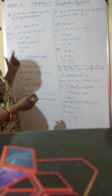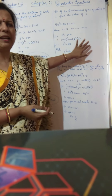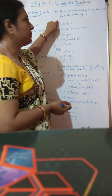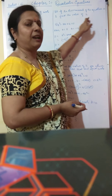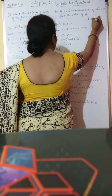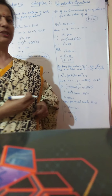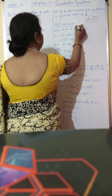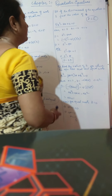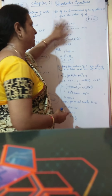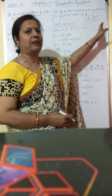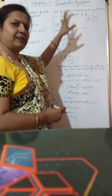Now there is another type of question which I have not generally seen in the books. The question is: if the discriminant of the equation is 1, find the value of s. You are given D equals 1. The equation is 5x² minus sx plus 4 equal to 0. Comparing with ax² plus bx plus c, the value of a is 5, b is minus s, and c is 4.